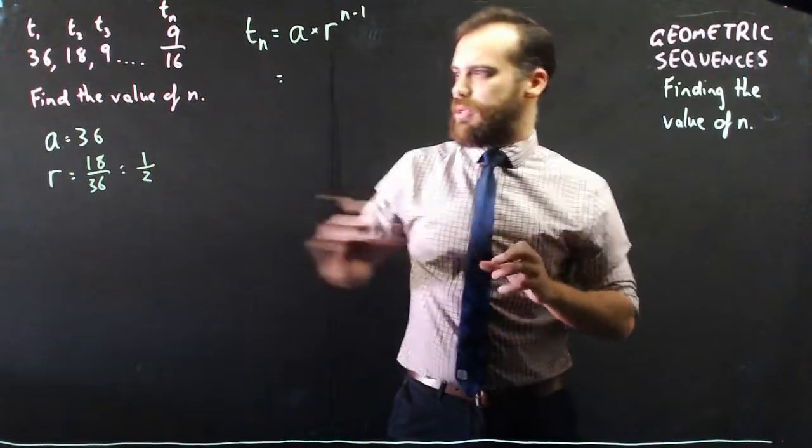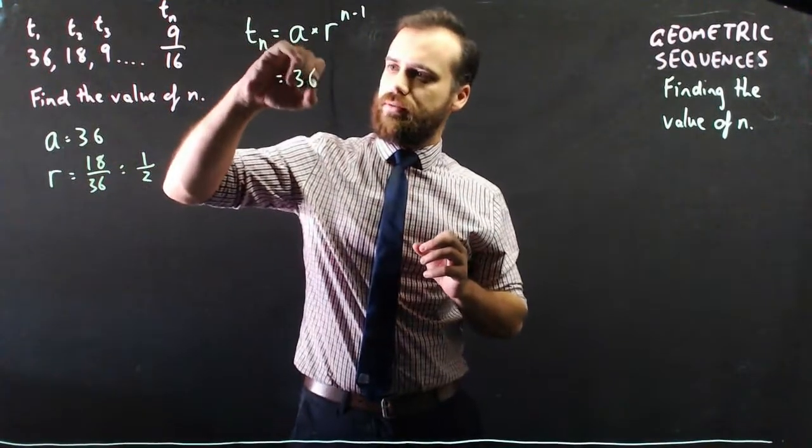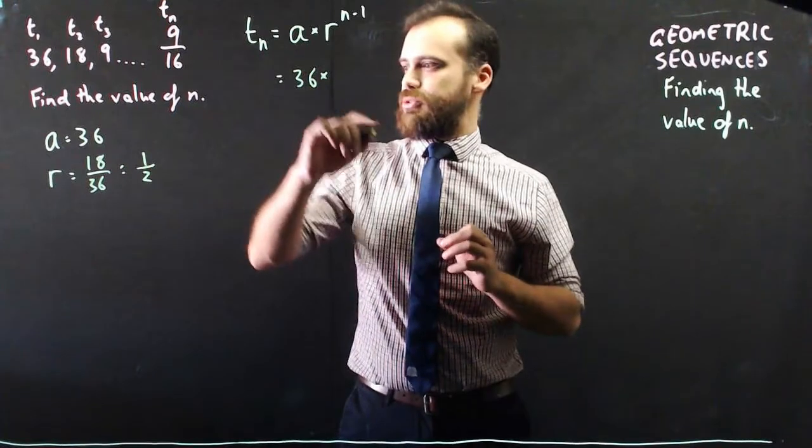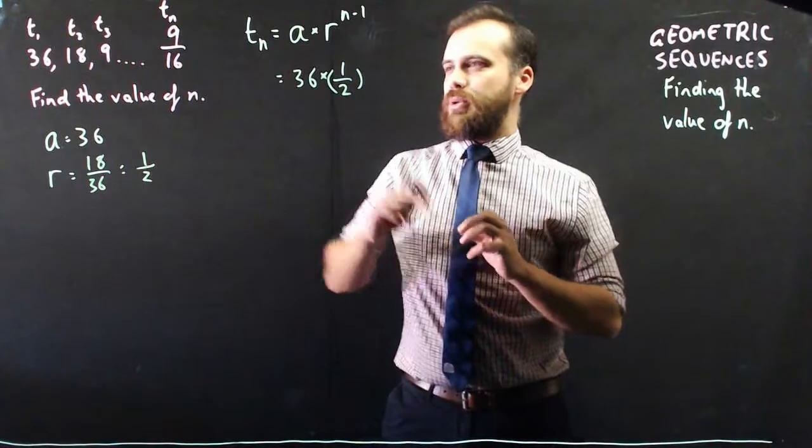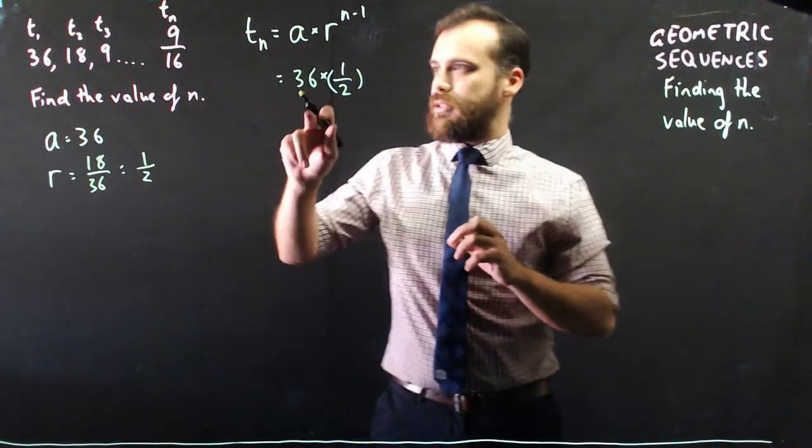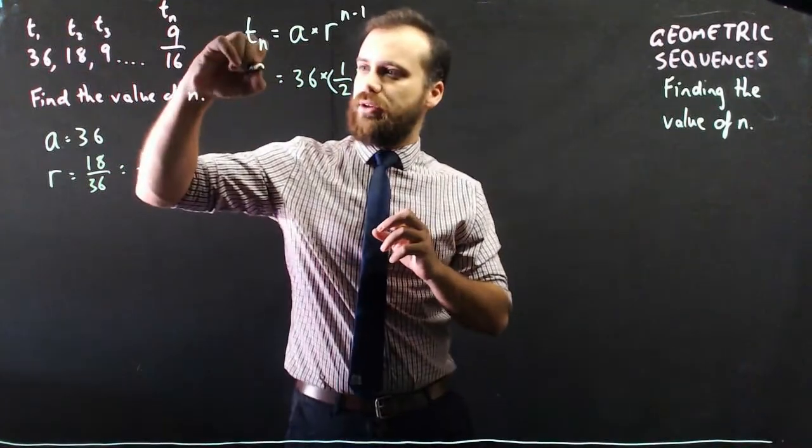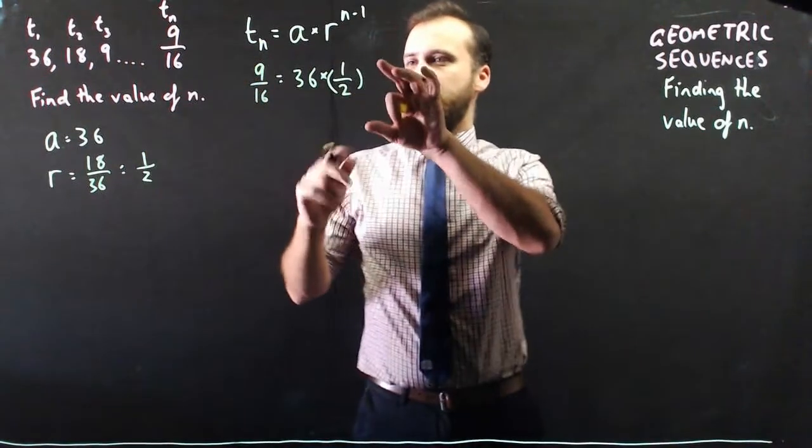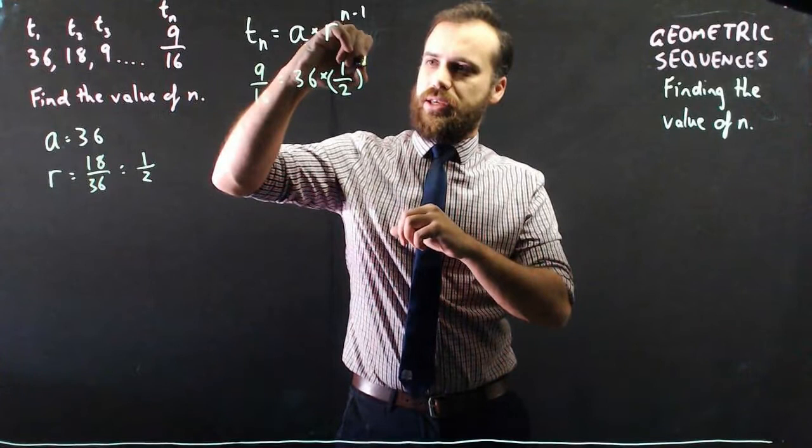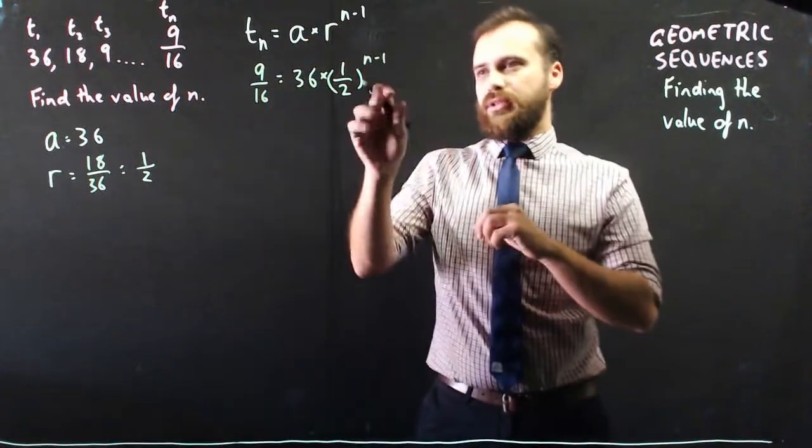Alright, so let's start putting in what we know. We know the first term was 36. We know that r is one half. Now we know that term n is going to be equal to 9 on 16. And we don't know what the n value is here, but we have a little n minus 1 there.